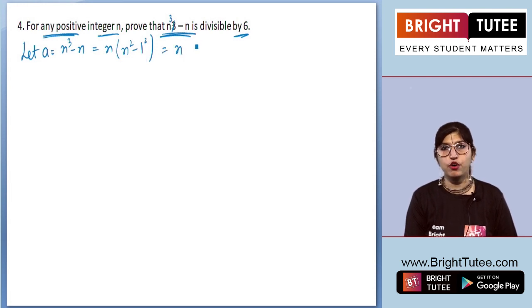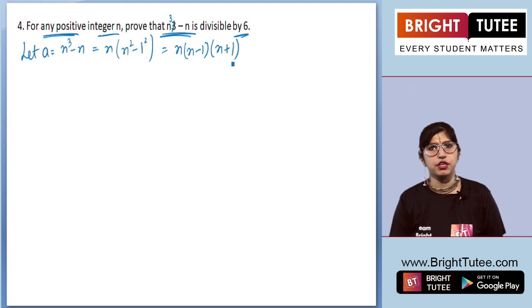By applying the formula a² - b², we get (a - b)(a + b). So n into (n - 1) into (n + 1). This is what we get for a.